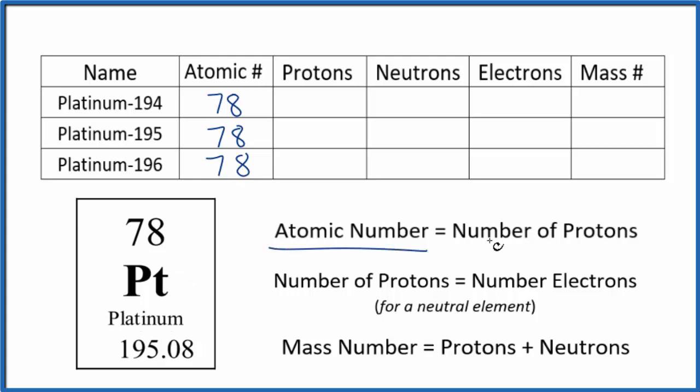And the atomic number, that equals the number of protons. So for each isotope, 78 protons. That doesn't change.